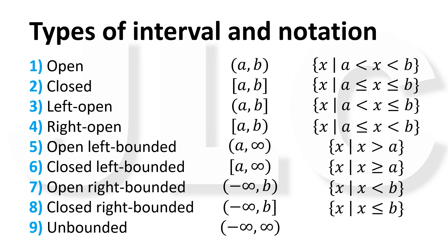An unbounded interval is an interval with no bound or limit. It can take any value from negative infinity to infinity, but not negative infinity nor infinity itself. It is the set of all x such that x is an element of the set of real numbers.